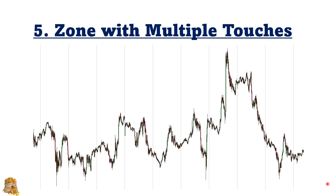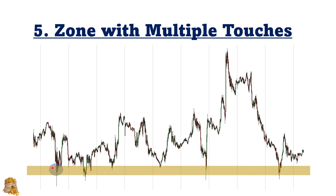Levels or value zones with multiple touches from multiple days are also very good support and resistance levels. On some day there's a low, and we can draw a horizontal value zone. You can see that the following days it's been touching this level and value zone multiple times — that means the market respects this value zone very much. The more touches, the stronger the support and resistance levels.